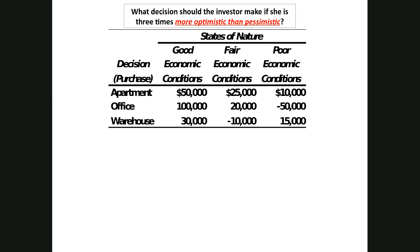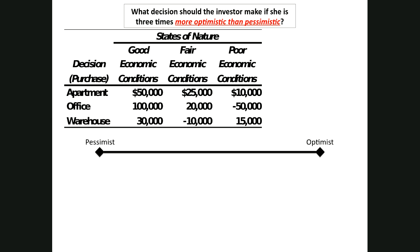We're going to talk about the situation developed by Hurwitz. Suppose our decision maker says, 'I'm more optimistic than pessimistic, but I'm not completely optimistic.' You continue the discussion and learn that you can actually quantify that — she may be three times as optimistic as pessimistic. So the question becomes: how do we determine how we weigh that information? This is the process that a scientist named Hurwitz developed, called the Hurwitz criterion.